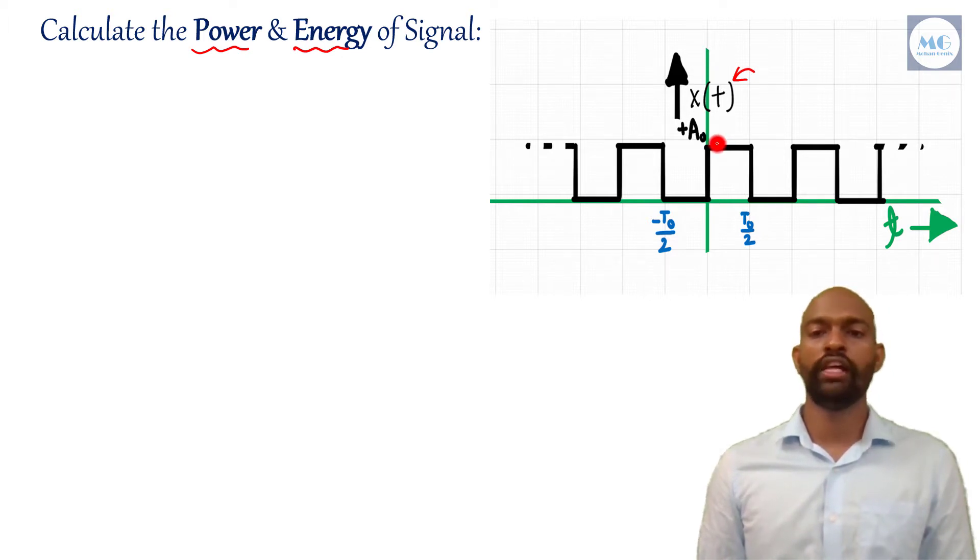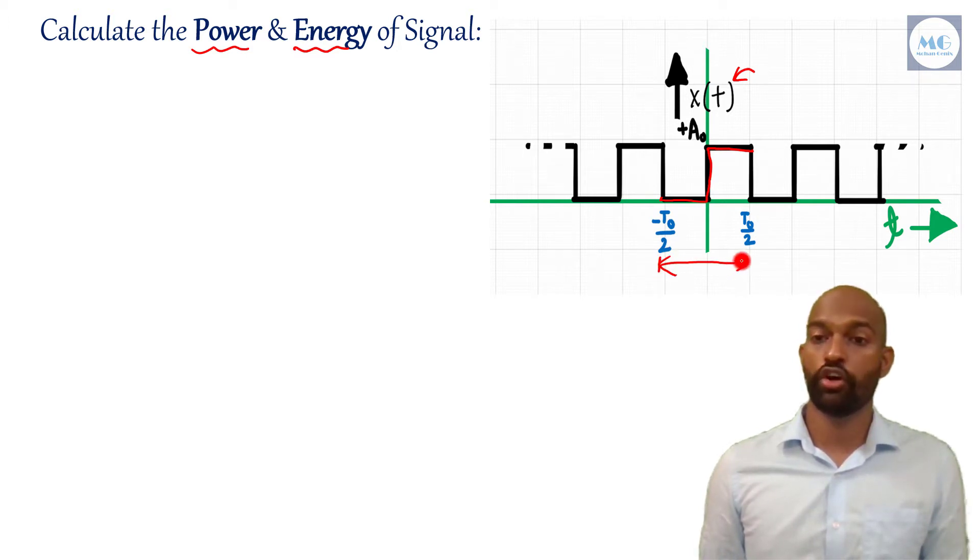As I already told you all that if a signal repeats itself after a particular interval of time, then it is a periodic signal. Here in this signal you can see this signal is repeating after a particular time. Suppose this is the time which is also called as t0, t0 means fundamental time period. It is repeating itself after this time, you can see here this signal is repeating from here to here, it is same as from this point to this point. So we conclude that this is a periodic signal.